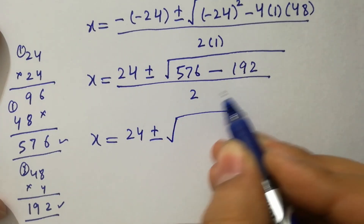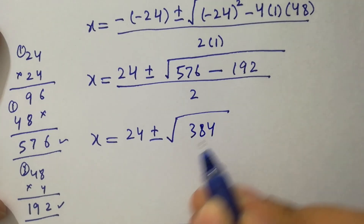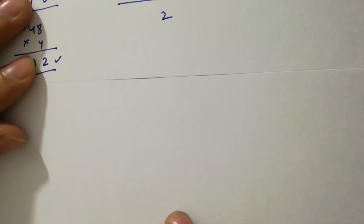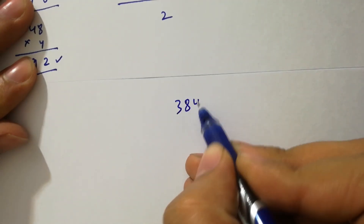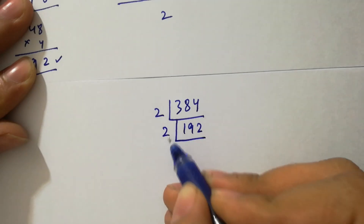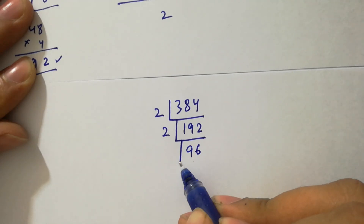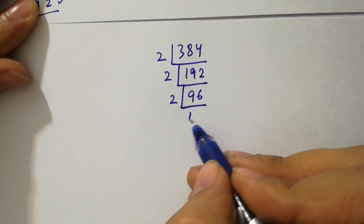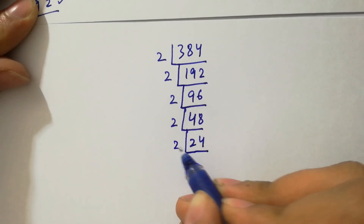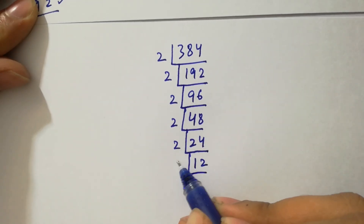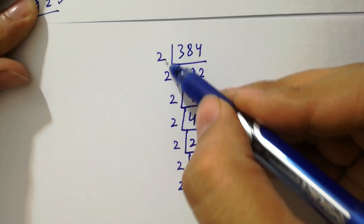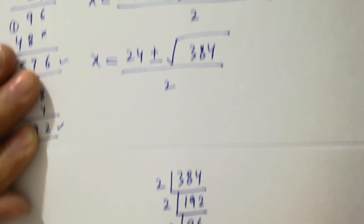So x equals 24 plus or minus square root of (576 minus 192), which is the square root of 384 over 2. To simplify 384: divide by 2 repeatedly — 384, 192, 96, 48, 24, 12, 6, 3 — giving 2 to the power 7 times 3.